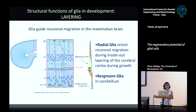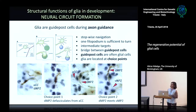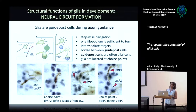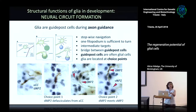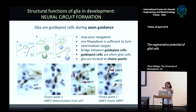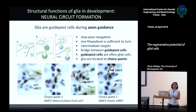In the cerebellum you have the Bergmann glia, which are also involved in the organization of the cerebellum. Another developmental function of glial cells is to function as guidepost cells during axon guidance. When neurons begin to form axons, at the tip of the axon you have the growth cone. The growth cone has to navigate and find its right route to the target via stepwise navigation — a neuron doesn't necessarily see really far away where it has to reach, but it sees intermediate targets like guidepost cells. These guidepost cells are often glial cells.